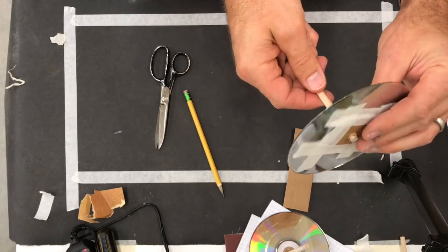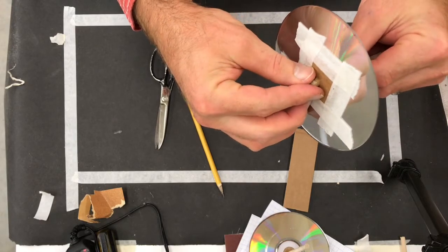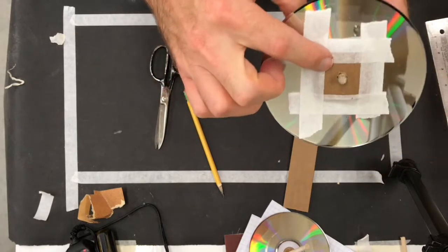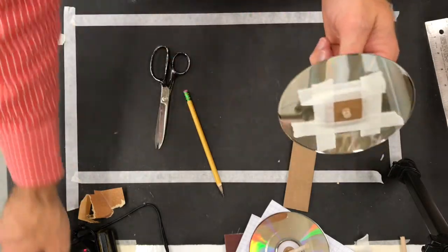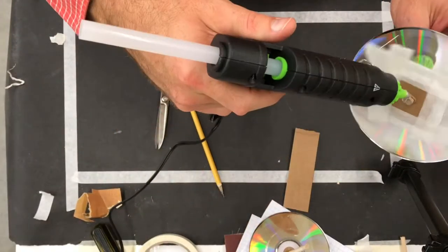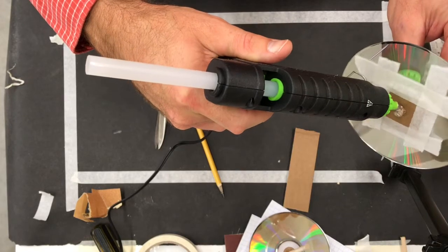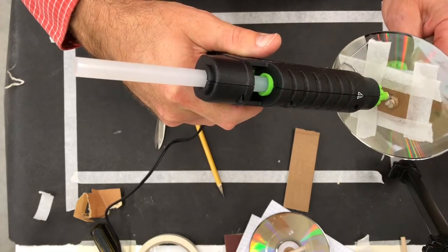Now, the next thing we want to do is glue the cardboard onto the dowel. So we're going to use our hot glue guns for that. And we're going to just apply a little bit of glue on the outside.